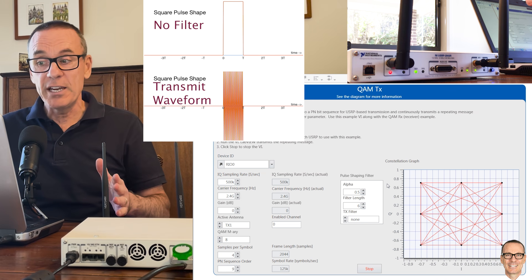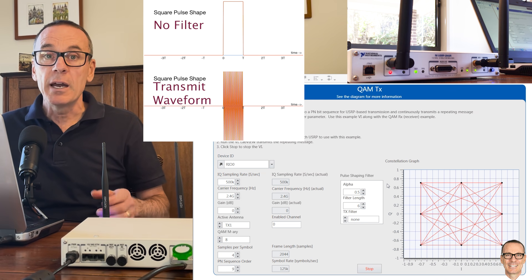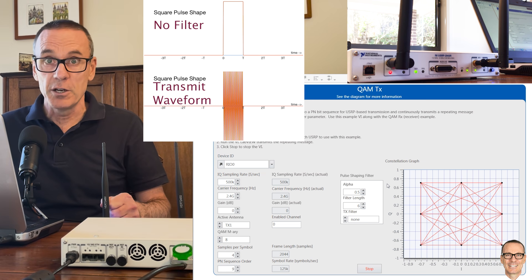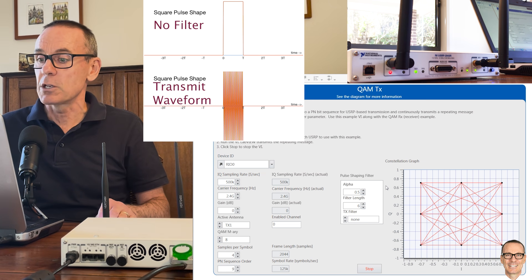All of the points at the transmitter are exactly located where you would expect those eight points to be. And if you'd like more information on a constellation diagram I encourage you to look in the show notes for this video. We've got other videos on the channel that explain all these concepts.